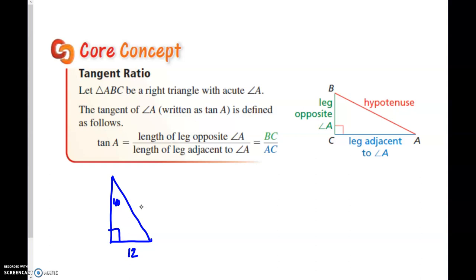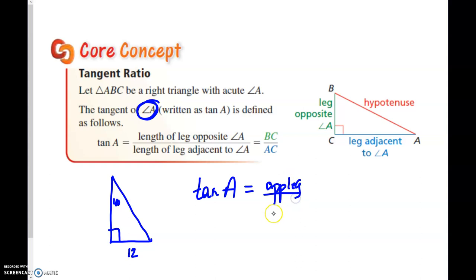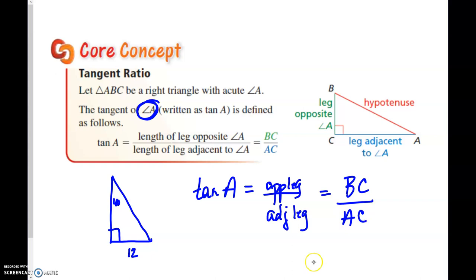The first one we were working with was tangent. We're always taking the tangent as a ratio of an angle. The ratio for tangent — the tangent of an angle — is the opposite leg over the adjacent leg. So for the tangent of A, the opposite leg is BC and the adjacent leg is AC. Sometimes people call that TOA: tangent is opposite over adjacent.